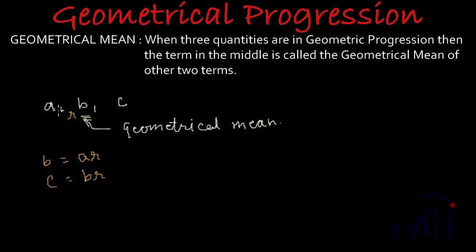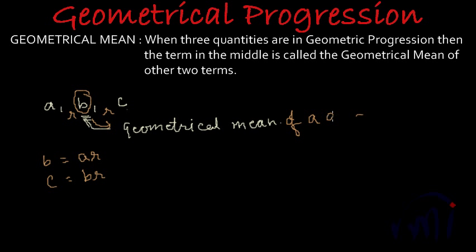So if A multiplied by R is B, and B multiplied by R gives you C, then these three numbers are in geometrical progression, and B is called the geometrical mean of A and C. We have two equations here — equation number 1 and equation number 2.